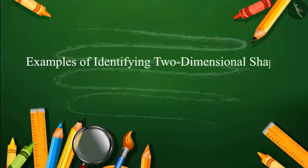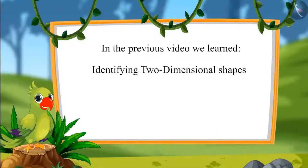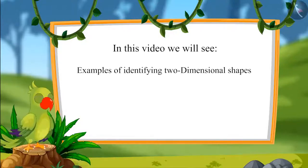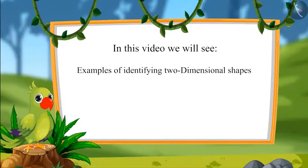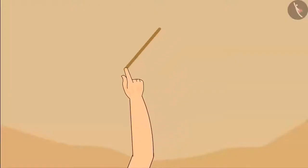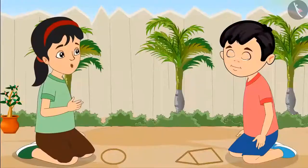Examples of identifying two-dimensional shapes. Hello kids. In the previous video, we learned identifying two-dimensional shapes. In this video, we will see examples of identifying two-dimensional shapes. Today, Chutu and Pinky are playing with sand in the park. Pinky, look — I have built this house with sand. Oh wow Chutu, this house is made of different shapes.